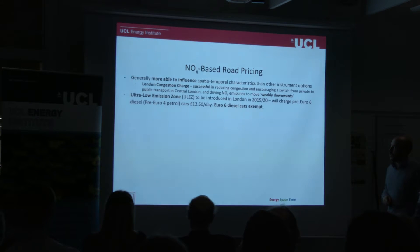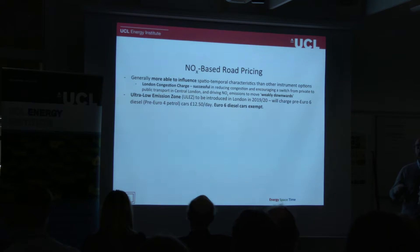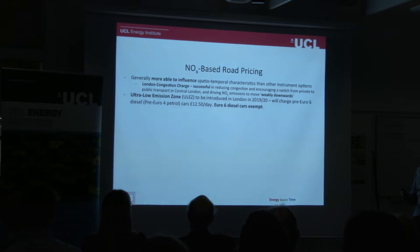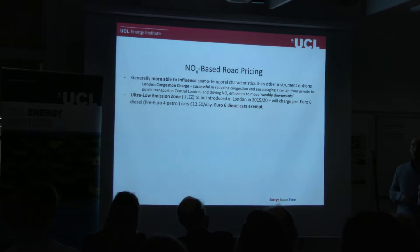The fourth option is road pricing. Zonal-based road pricing, for example the London congestion charge, can more effectively influence the spatio-temporal characteristics of emissions — where and when emissions are created. The congestion charge in London has been generally successful in reducing congestion and encouraging a switch from private to public transport in central London, and it has had an indirect influence in driving NOx emissions downwards.